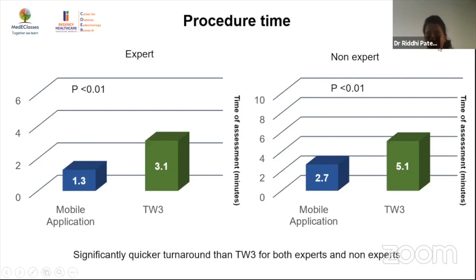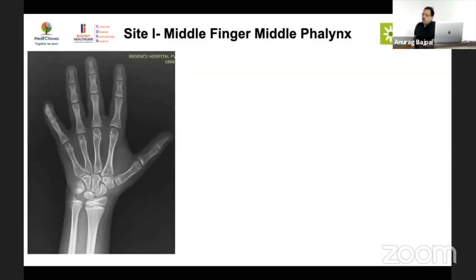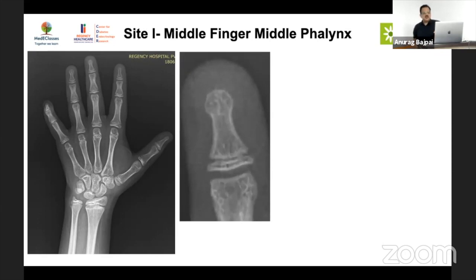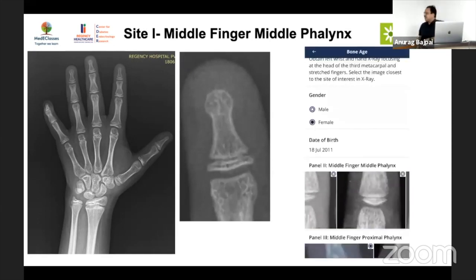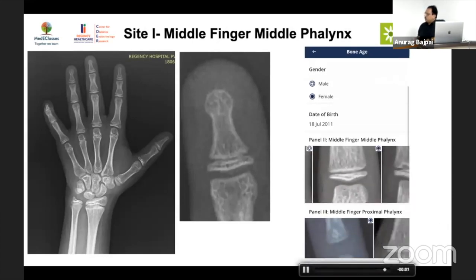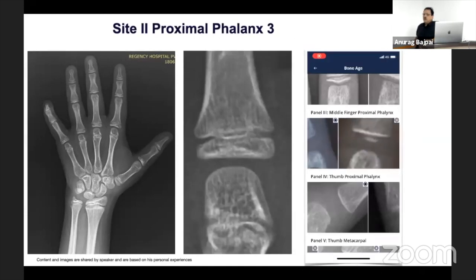The mobile application is simple and accessible, validated against the gold standard, superior to Bone Expert in accuracy, and usable by any pediatrician or non-expert in routine practice. To use it: select the X-ray, compare each of the five pre-loaded sites to your X-ray, and select the closest match. The first site is the middle finger middle phalanx — compare to the most suited reference image and select that option.